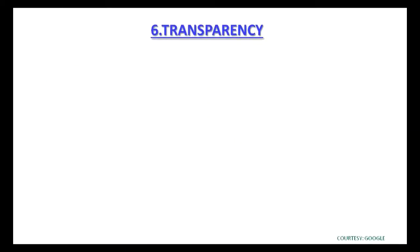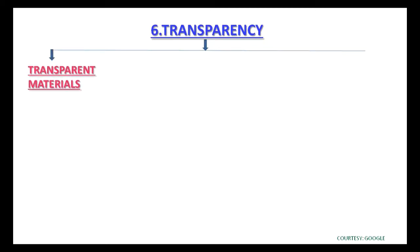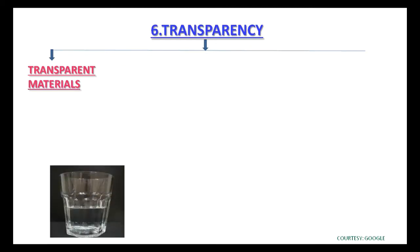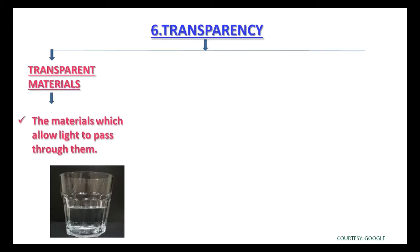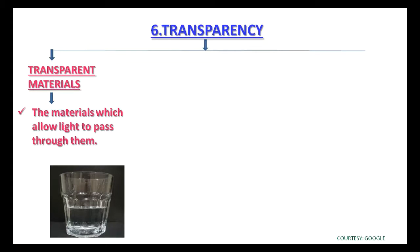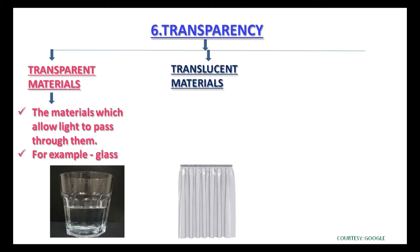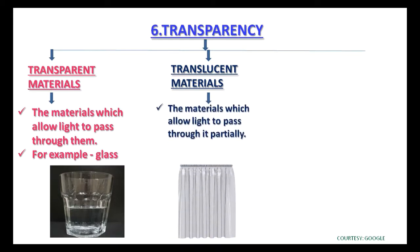The sixth property is transparency. There are three types: transparent materials, translucent materials, and opaque materials. Transparent materials are the materials which allow light to pass through them — for example, glass. Translucent materials are the materials which allow light to pass through them partially — for example, butter paper.